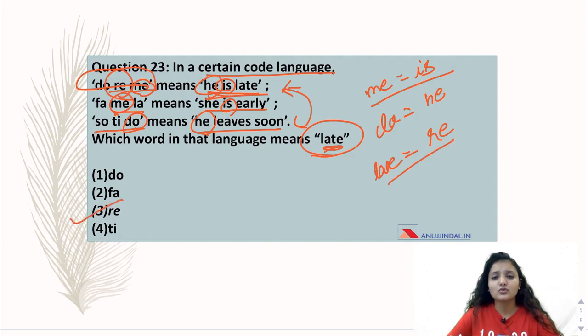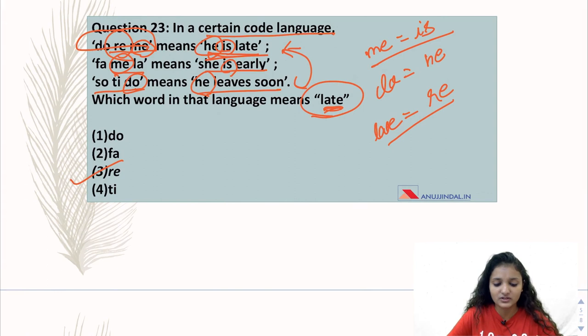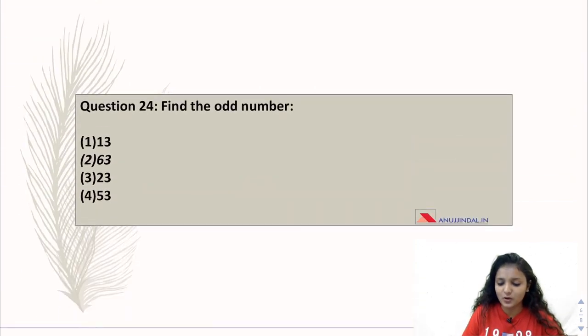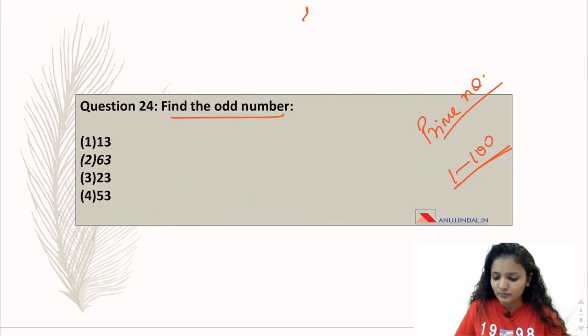Do subscribe to our channel for further videos because when you practice quizzes, you will be more beneficial. Next question is find the odd number: 1363, 2353. You will find that these are prime numbers. Prime numbers are numbers which are not divisible. By heart, know 1 to 100 prime numbers at least. Prime numbers are 2, 3, 5, 7, 11, 13, 17, 19.